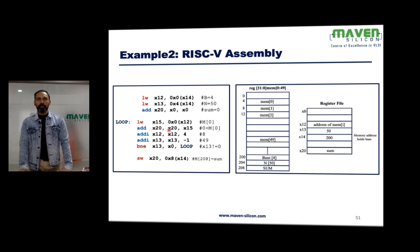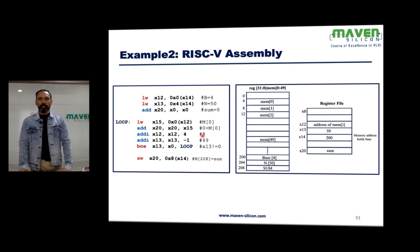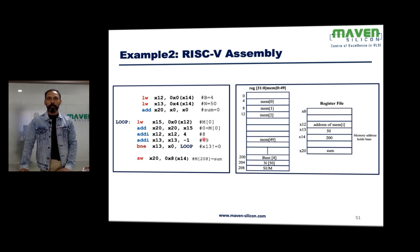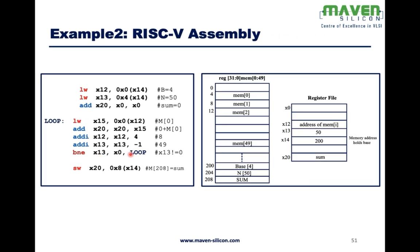Then we do ADD: x20 (initialized to 0) plus array[0], and store the result. Then ADDI x12: the address in x12 is incremented by 4 (byte addressing) to point to the next location — it becomes 8. We also decrement x13 (number of elements): 50 becomes 49. We check if x13 is not equal to 0 — if not, the loop continues. On the next iteration it loads memory[1], computes memory[0] plus memory[1], and x12 becomes 12. This continues iterating through all elements.